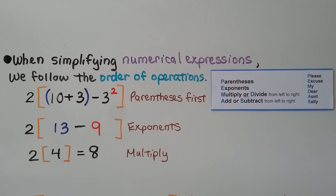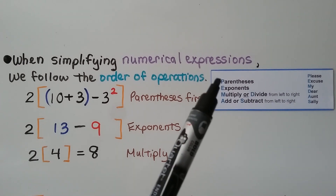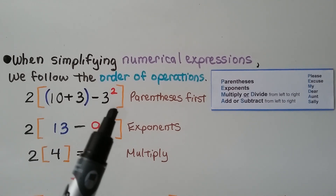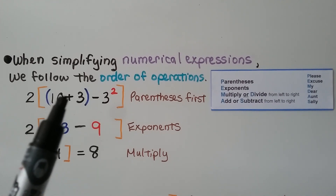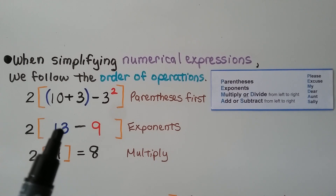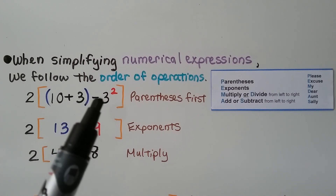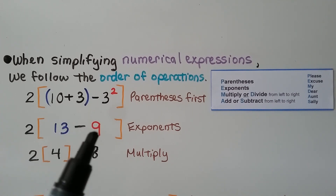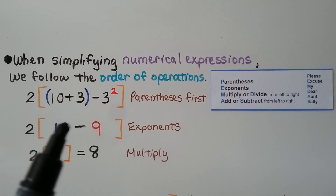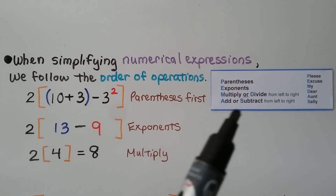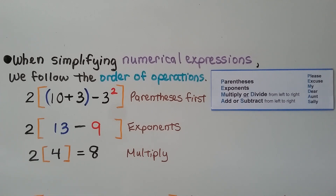When simplifying numerical expressions, we follow the order of operations — we always start with parentheses first, solving the innermost grouping symbols first. In this example, we solve within the parentheses: 10 plus 3 is equal to 13. Next we handle exponents — we need to subtract 3 to the 2nd power, which is 3 times 3, that's 9. Now we solve within the brackets: 13 minus 9 is equal to 4. Then we multiply: 2 times 4 is equal to 8.